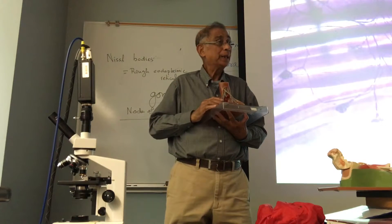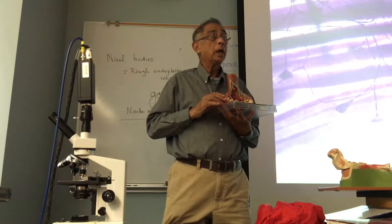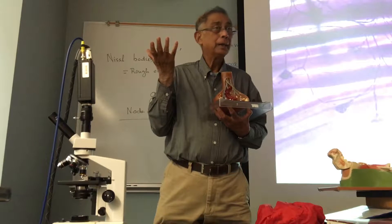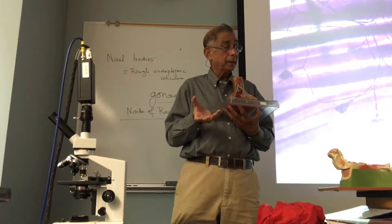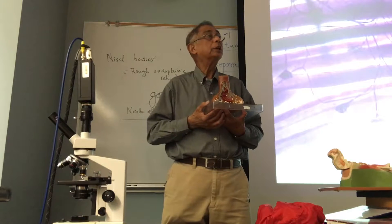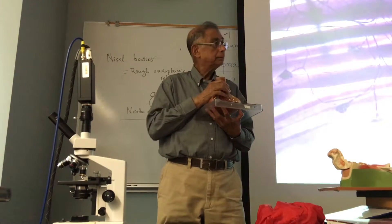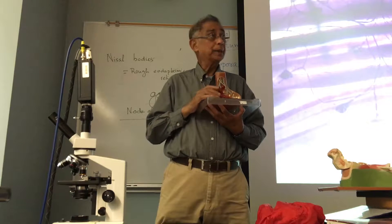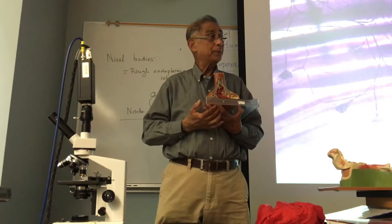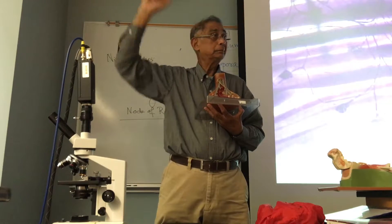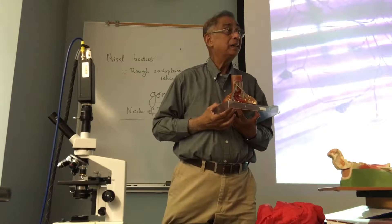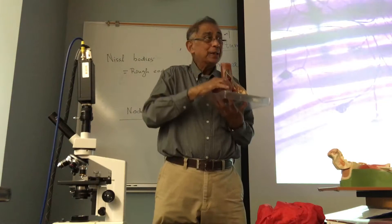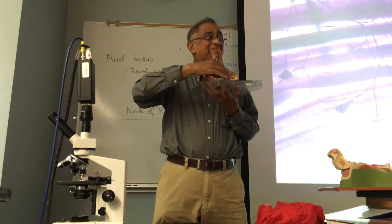Can you see all these bits? These are vesicles — these are called synaptic vesicles. What do they contain? Neurotransmitter. Neurotransmitter is a very simple concept: the word 'neuro' comes from neuron, and 'transmitter' is a chemical substance. It is made by the neuron, and it is located inside the synaptic vesicles.